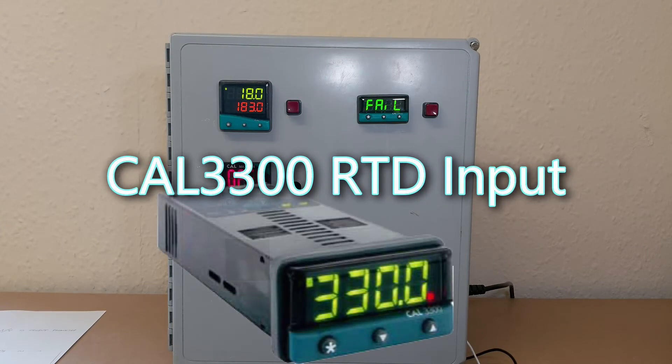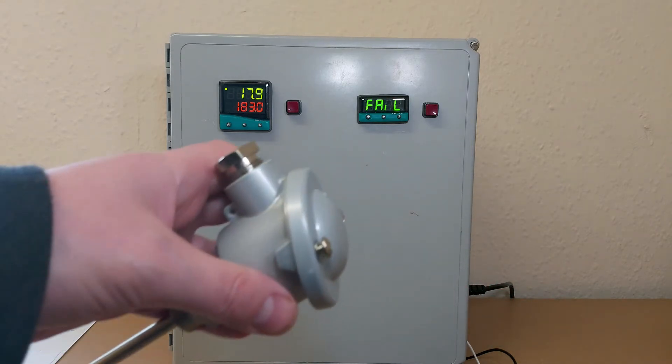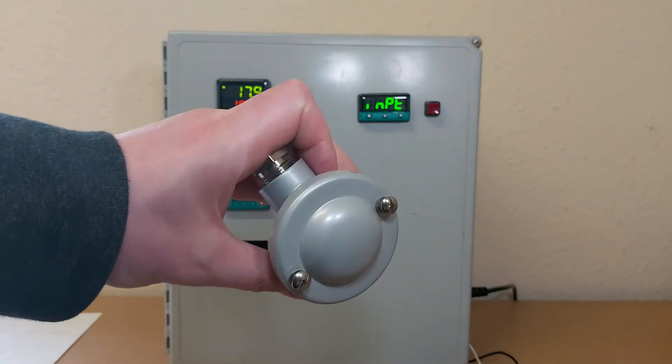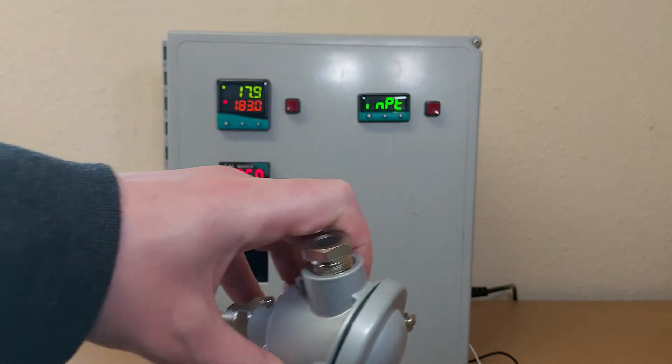I'm now going to set up the CAL3300 for an RTD input type. This is a PT100, so I'm going to have to unscrew this cap and wire it up.